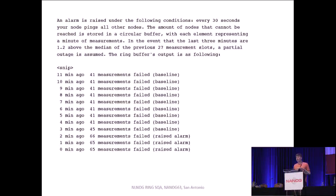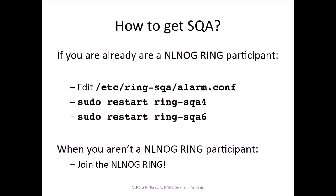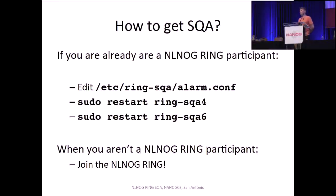With this alert, you then know exactly which provider to shut BGP sessions with, or which router to give a kick — at least that's the intention. If you're already a Ring participant, you can very easily enable alerting today. Just log into your box, edit /etc/ring-sqa/alarm.conf, put in your email address, restart the daemon, and you're good to go. The daemon takes roughly 30 minutes to warm up to collect that baseline, but after that it will stand guard over your network and alert you when something is up.